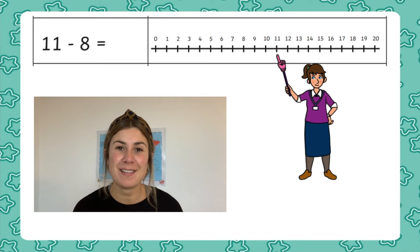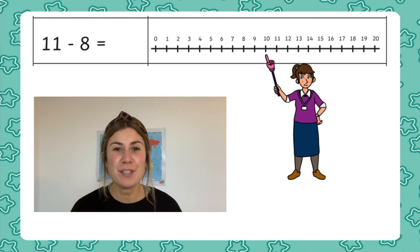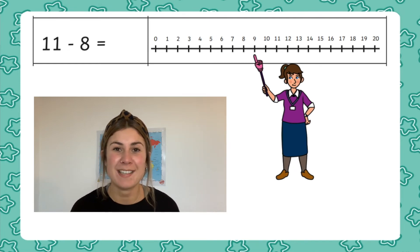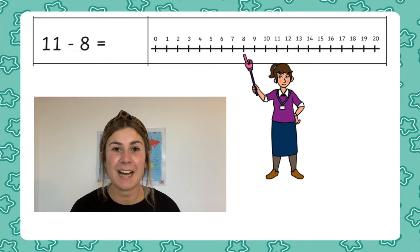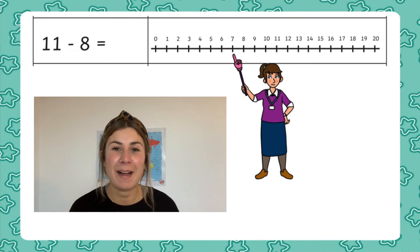To support your children whilst they're doing this you might want to use an object such as a pointer to help them with counting down the line. This will help remind them where they're up to on the number line.